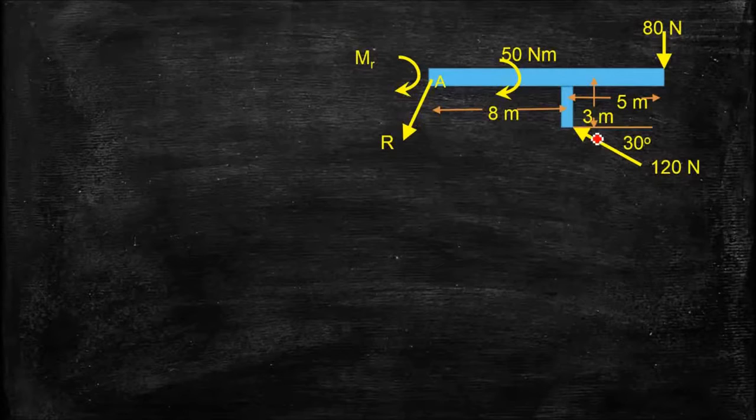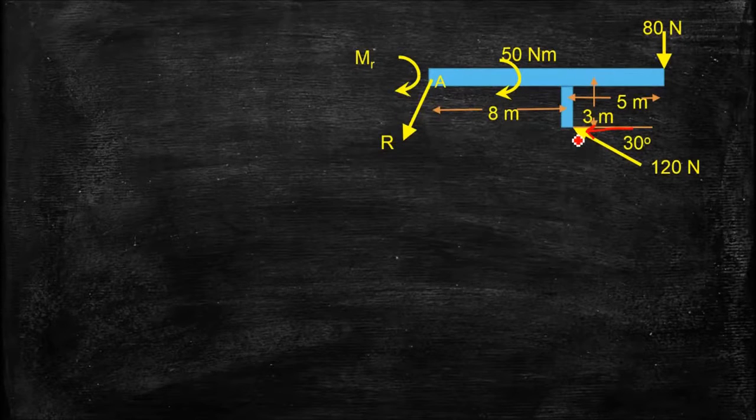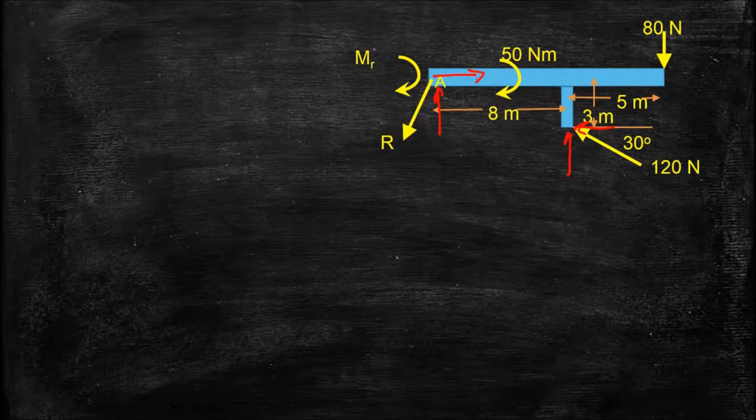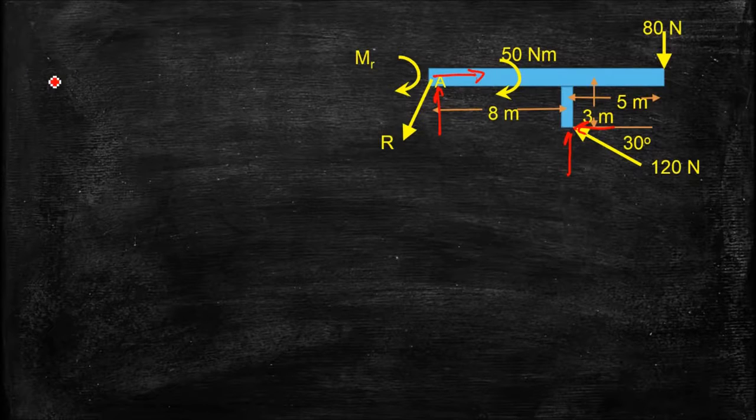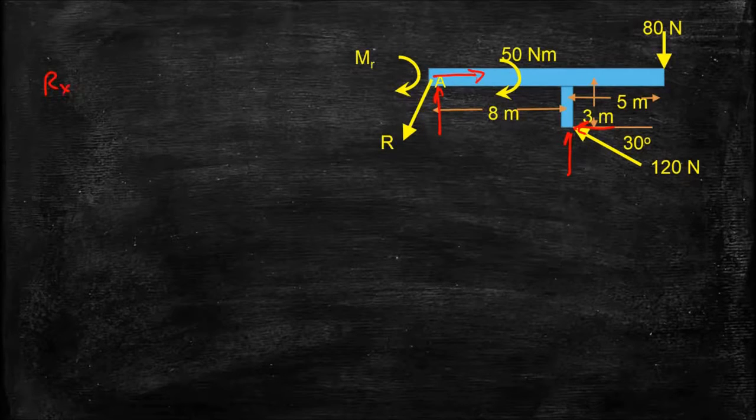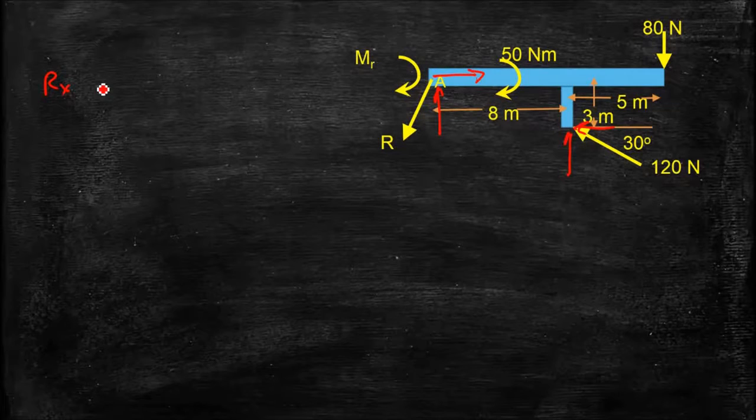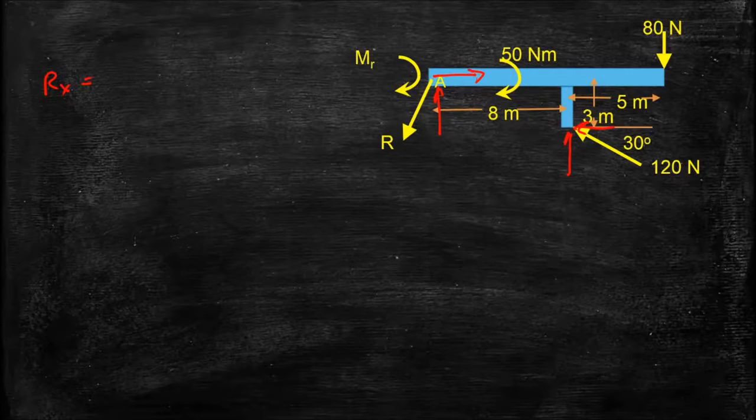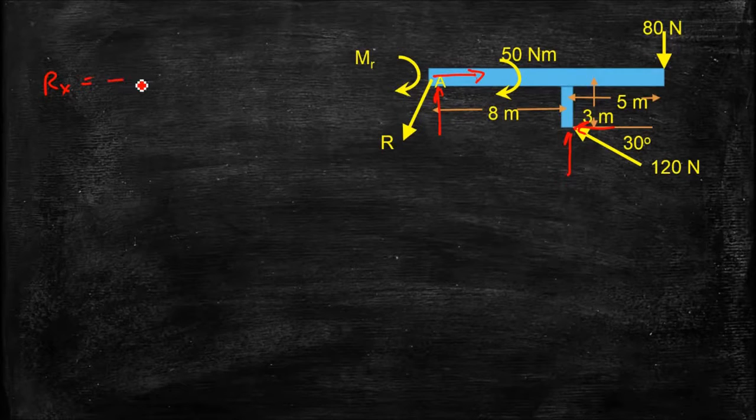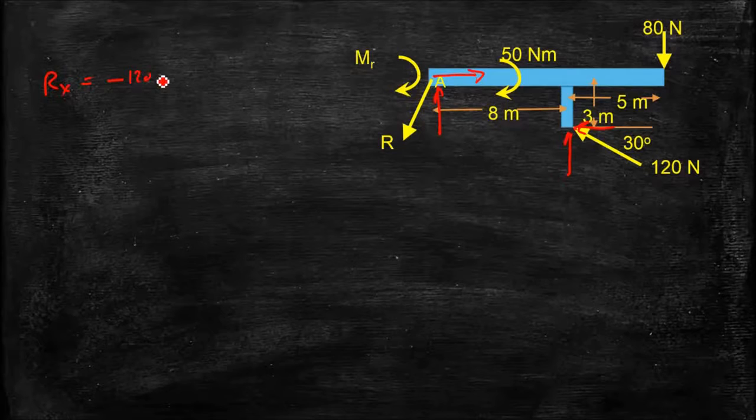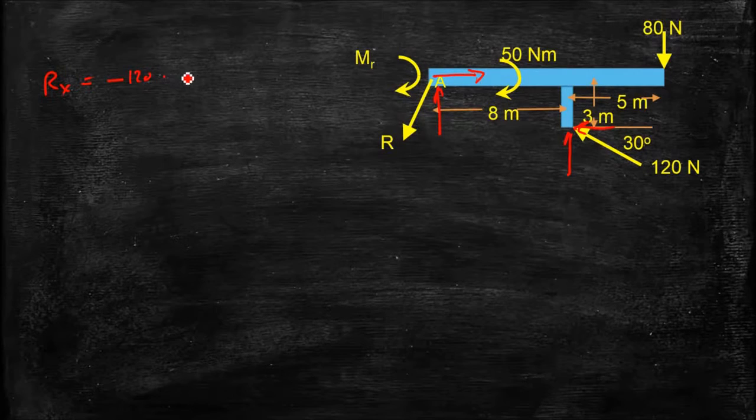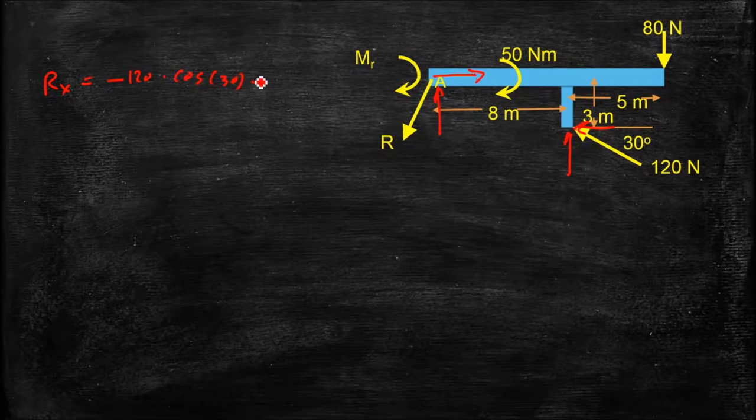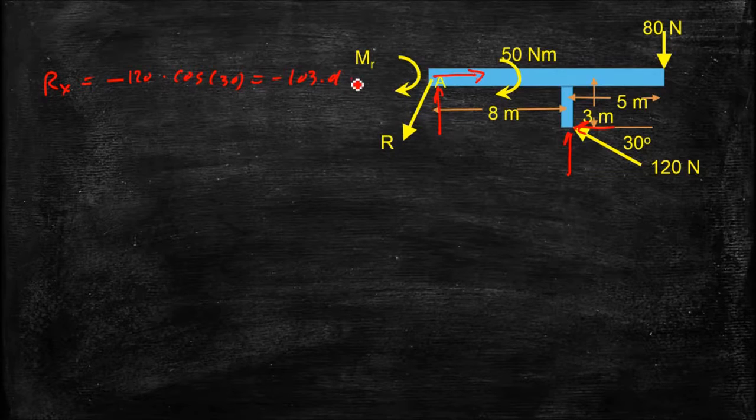I can resolve this 120 Newton force into X and Y components using Cartesian notation. My resultant force in the X direction, R sub X, is going to be equal to the sum of the forces in the X direction, all the externally applied forces. And that's just simply equal to, it'd be negative because it's pointing to the left, negative 120 times the cosine of 30, and that gives us negative 103.9 Newtons.